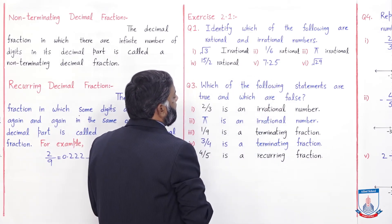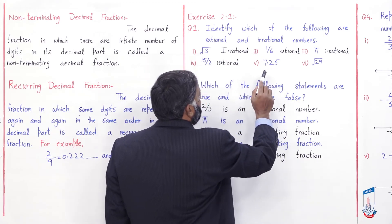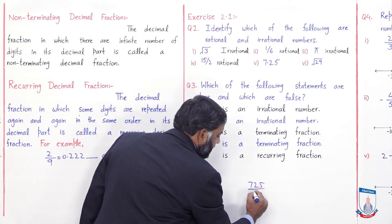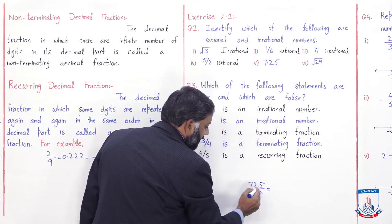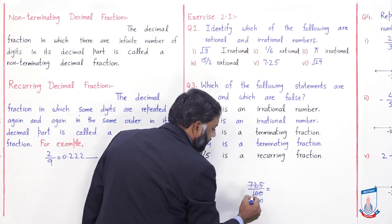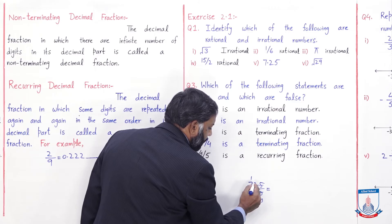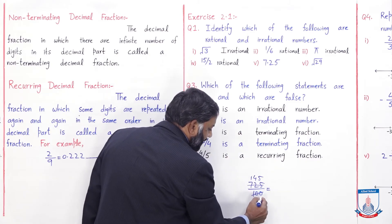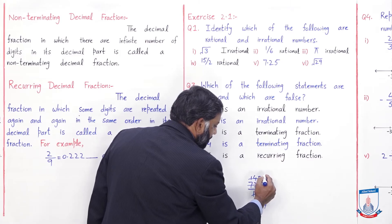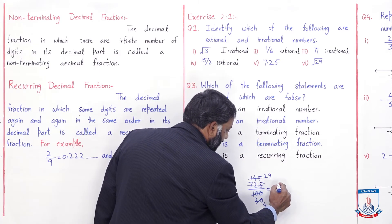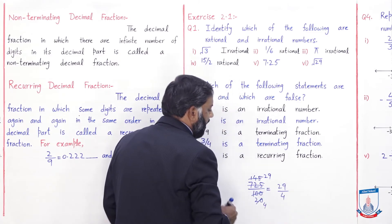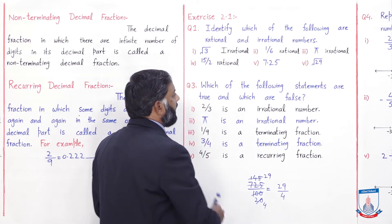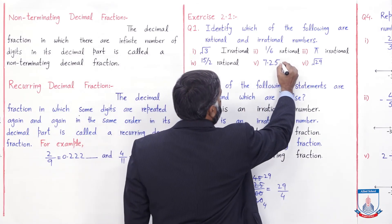7.25 کا decimal remove کریں تو 725/100 آئے گا۔ اس کو simplify کریں — 5 سے cutting ہوگی — تو یہ fraction 29/4 آئے گی۔ جب 7.25 کو fraction میں convert کیا تو یہ p over q کی form میں آ گیا، لہذا 7.25 بھی rational number ہے۔